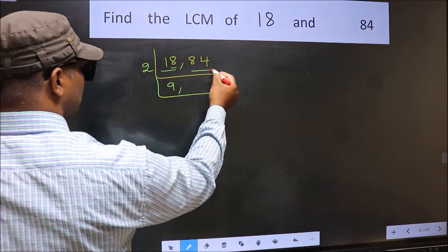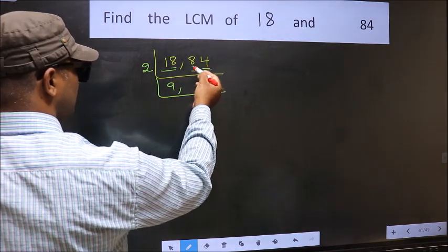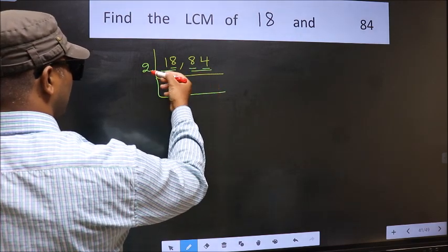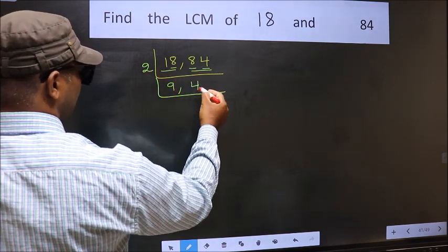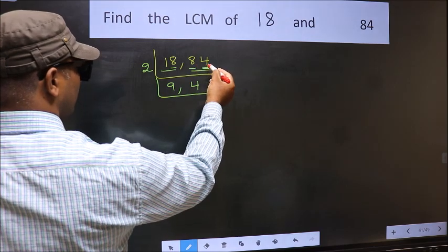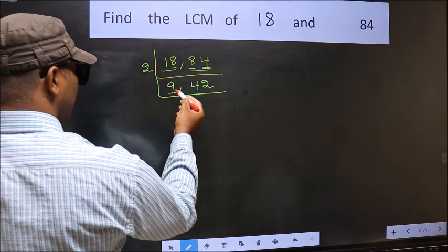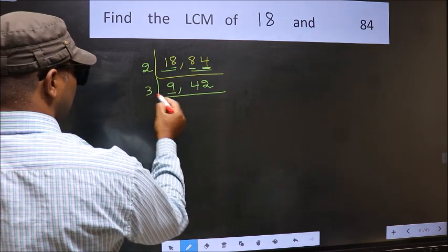The other number 84, last digit 4 is even, so this is divisible by 2. First number 8. When do we get 8 in the 2 table? 2 fours 8. The other number 4. When do we get 4 in the 2 table? 2 twos 4. Now here we have 9. 9 is 3 threes 9.